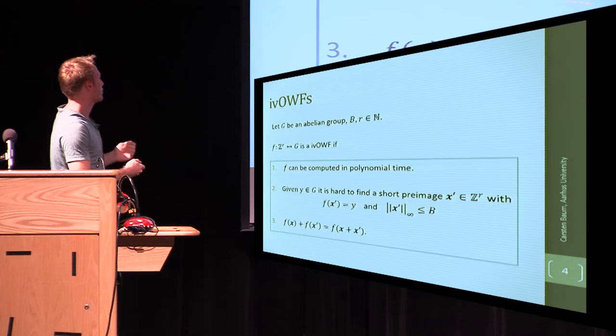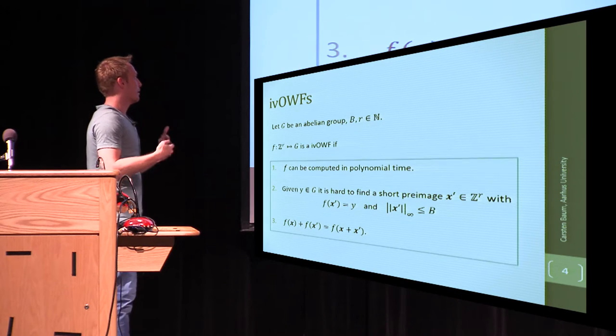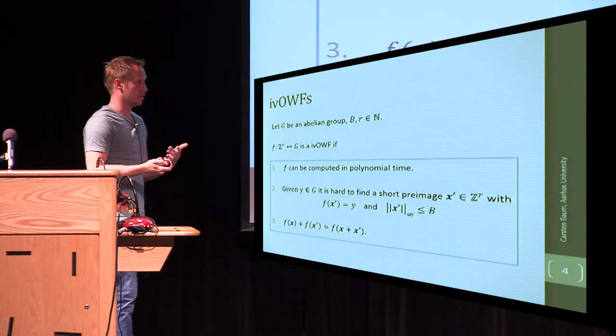And third criterion is the homomorphic property, meaning that the map into the abelian group G is supposed to carry over some of the additive structure into the abelian group.